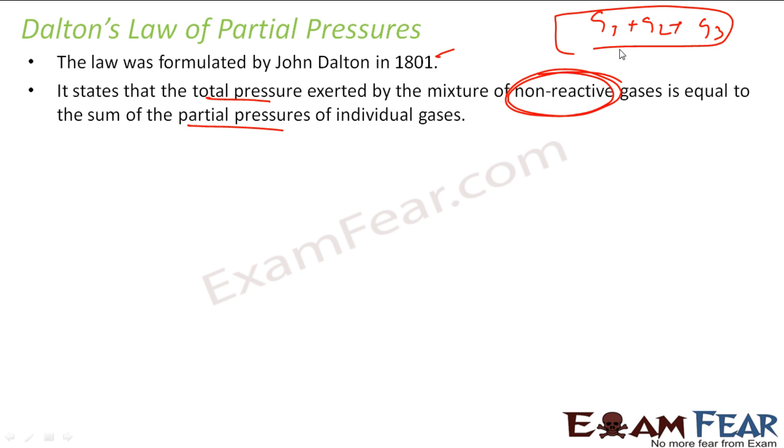If I have a mixture of this and I want to find total pressure, find the pressure of this, pressure due to this, pressure due to this. You add this, you get total pressure. So total pressure is summation of all the pressures. We know that P is nothing but nRT by V, right?